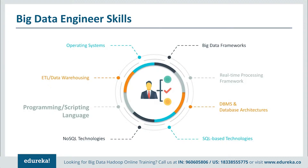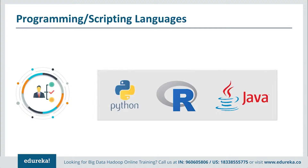Next, we have programming and scripting languages. Various programming languages can serve the same purpose, so knowledge of one is enough — the logic remains the same even if the language flavor changes. If you're a beginner, go ahead with Python as it is easy to learn due to its syntax and good community support. R has a steeper learning curve, developed by statisticians and mostly used by analysts and data scientists.